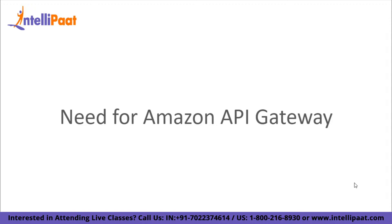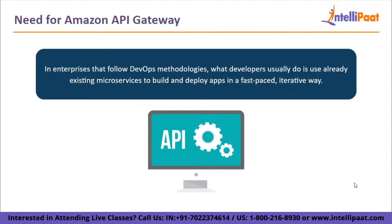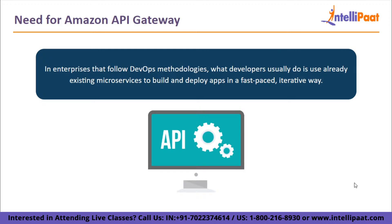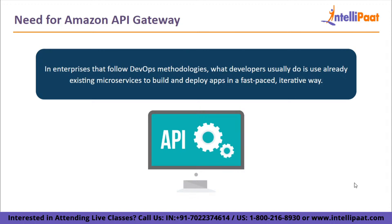What is the need for Amazon API Gateway? In enterprises that follow DevOps methodologies, developers use already existing microservices to build and deploy apps in a fast-paced, iterative way. These microservices use APIs to communicate with the app. When an application uses many microservices, many APIs are used for communication between the app and microservices. Managing all these APIs becomes a hassle, and this is where the AWS API Gateway comes into the picture.